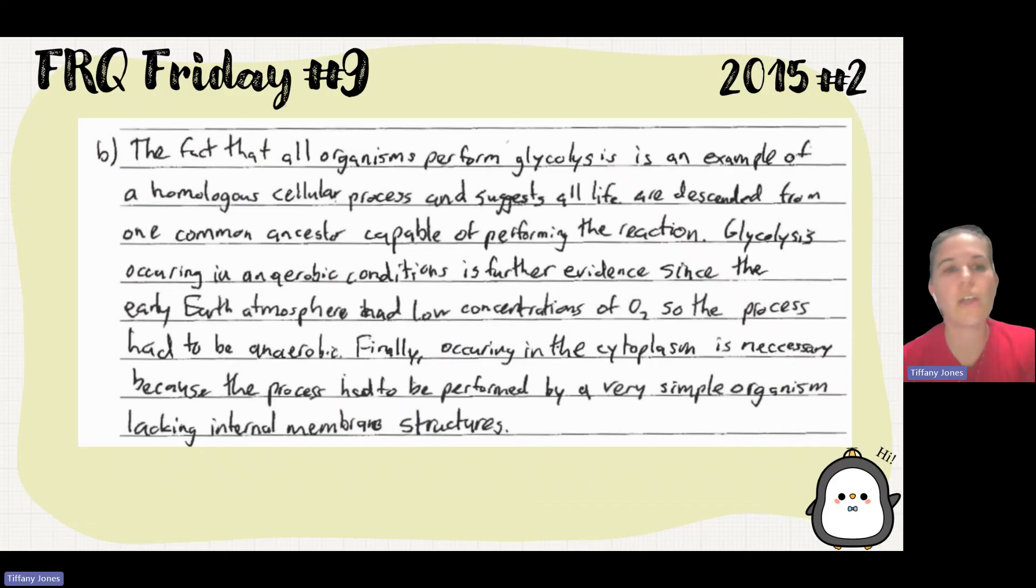The student goes on and talks about the fact that all organisms performed glycolysis as an example of homologous cellular process. Looking at homologous traits means that these are traits that are the same. It suggests that all lives descended from one common ancestor capable of performing this reaction. Glycolysis occurs in anaerobic conditions. It's further evidence since early earth atmosphere had low concentration of oxygen. Finally, occurring in the cytosol is necessary because the process had to be performed by a very simple organism that lacks the internal membrane structures.